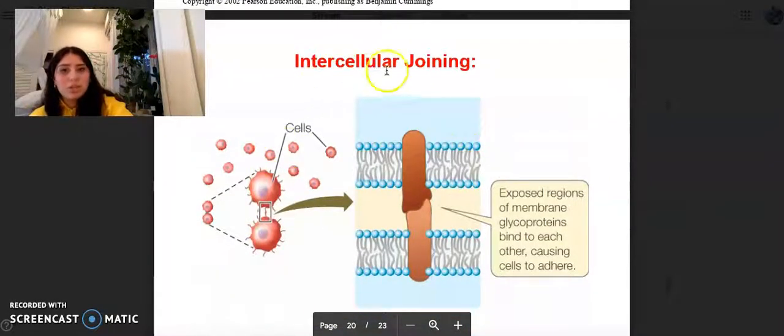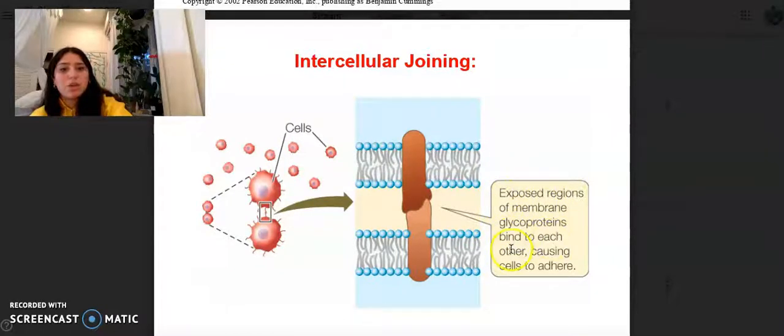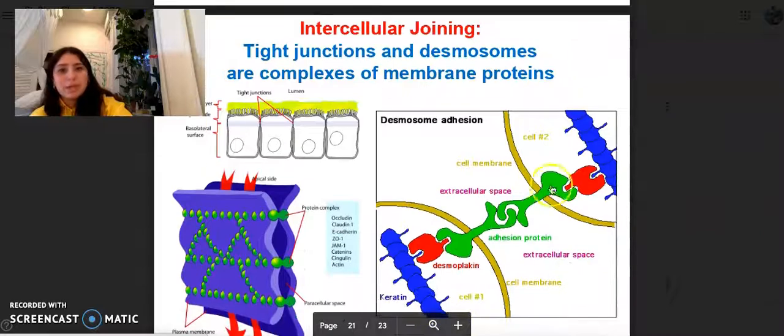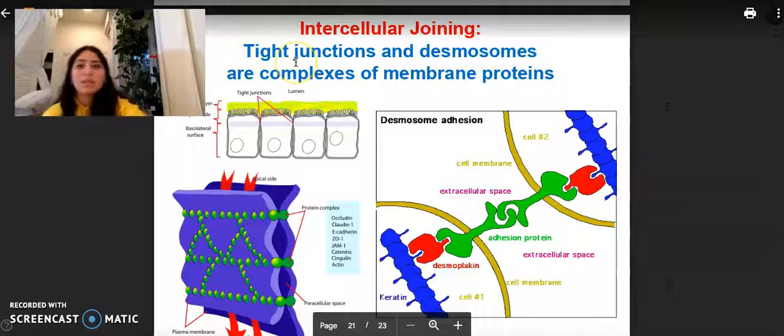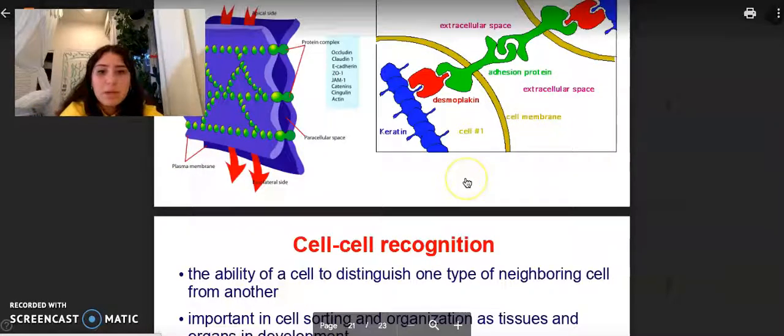Here's some intracellular joining. Exposed regions of membrane glycoproteins bind each other, causing cells to adhere. Intracellular joining has tight junctions and desmosomes and are complexes of membrane proteins. Here's some stuff happening.